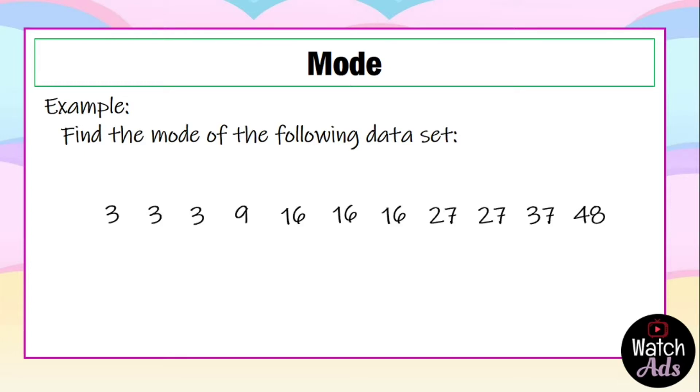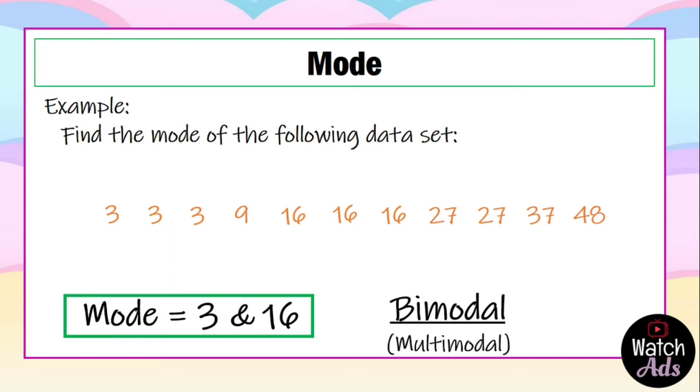Next, let's have another example. Let's have this set of data: 3 appears thrice, 9 appears once, 16 appears thrice, 27 appears twice, 37 appears once, 48 appears once. Now if you have noticed, 3 and 16 both appeared thrice, so we have two modes: 3 and 16. This type of data is bimodal because two data appears most in the set, and it is also multimodal because there is more than one mode.